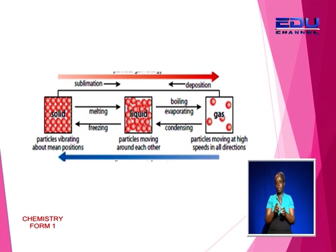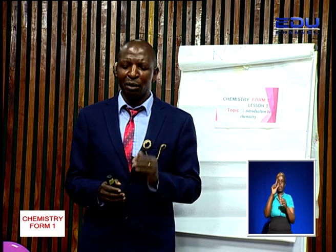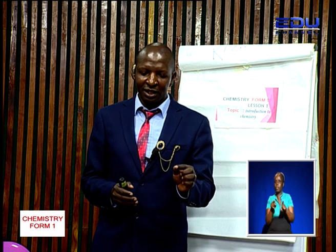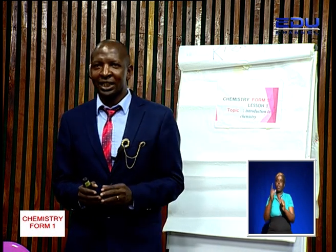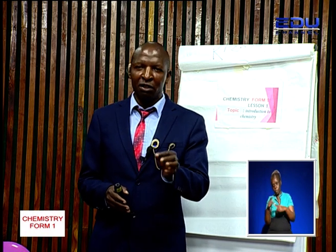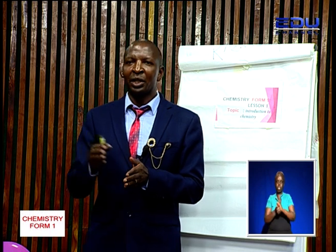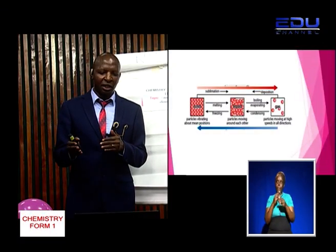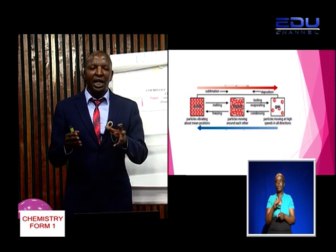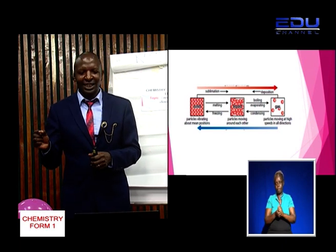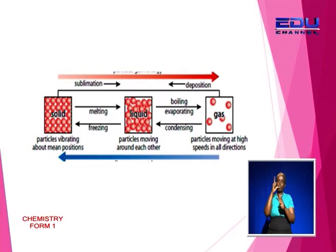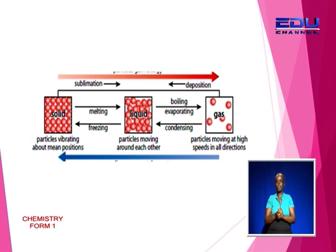The process that occurs to change a solid to a liquid is called melting, and it requires heat. You can also convert a liquid into a gas, and the process involved is called boiling or evaporation. We can also convert a gas into a liquid — that process is called condensation. You can also convert a liquid to a solid, and that is called freezing.